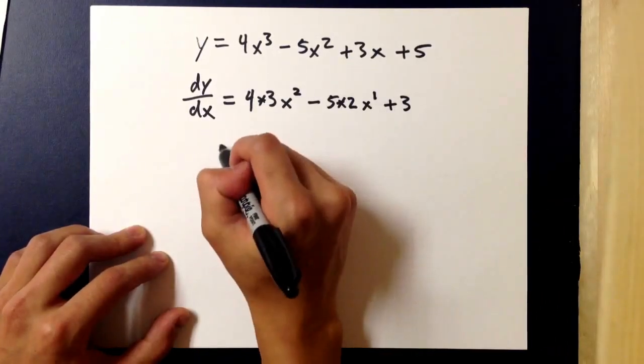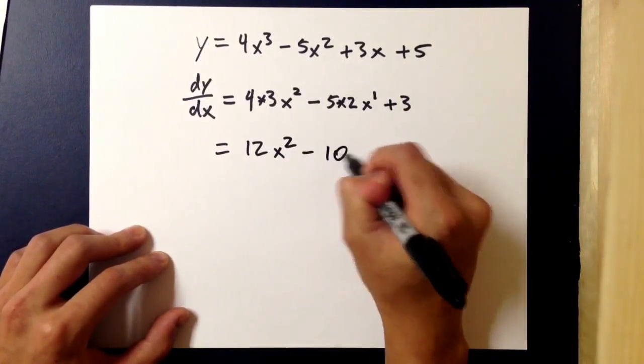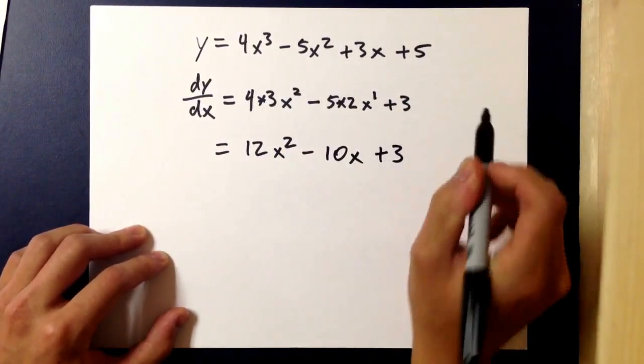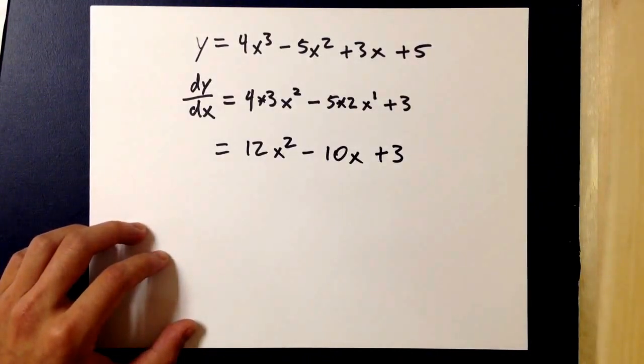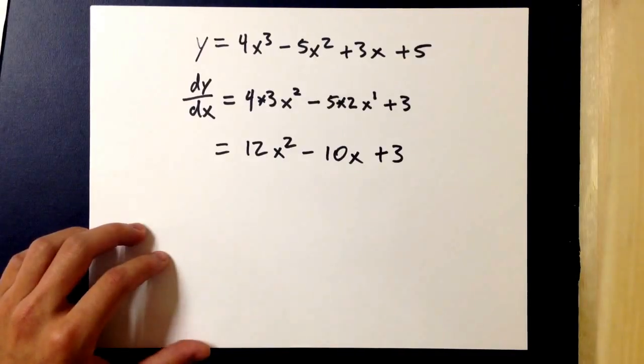So, if we simplify this it would turn out to have 12x squared minus 10x plus 3. Much easier than doing the limit definition, we've already found the derivative to this long polynomial using the power rule.